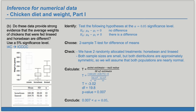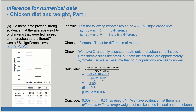Now we're ready for the conclusion. Our p-value is less than our significance level, so we reject H₀. If we reject H₀, we have evidence for H sub A. We have evidence that there is a difference in the average weights of chickens fed linseed and horse bean.